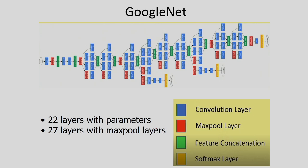The architecture of GoogleNet uses a color-coded diagram: blue for convolution layers, red for max pooling, green for filter concatenation, and yellow for softmax. The fundamental unit is called the inception module. The entire network is constructed by repeating this module. There are nine inception modules in GoogleNet in total, forming the basis of the complete architecture.